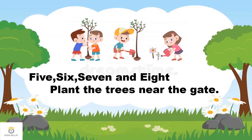Five, six, seven and eight — plant the trees near the gate. Five, six, seven and eight — plant the trees near the gate. The poet is telling us to plant trees near the gate, so whenever we go out and come inside we will see the plants and feel happy, because trees are our good friends and true friends.